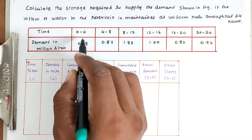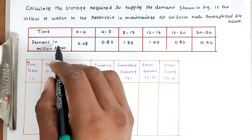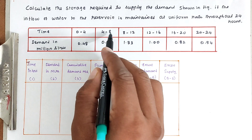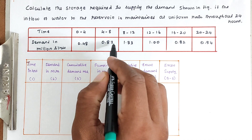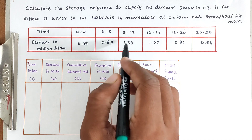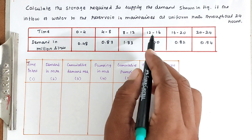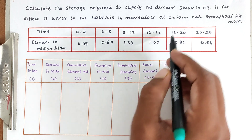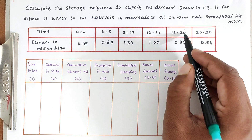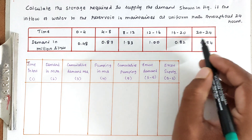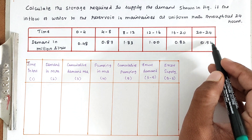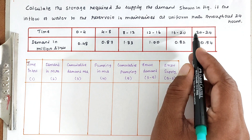The given data: from 0 to 4 hours the demand is 0.48 million liters; 4 to 8 hours is 0.87; 8 to 12 hours is 1.33; 12 to 16 hours is 1.00; 16 to 20 hours is 0.82; and 20 to 24 hours is 0.54 million liters. We have to find out the storage capacity of the water supply.